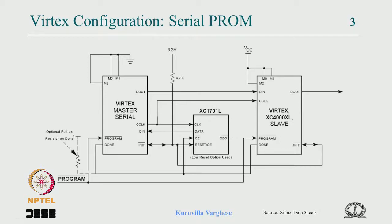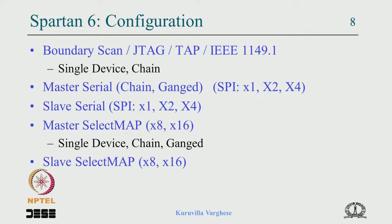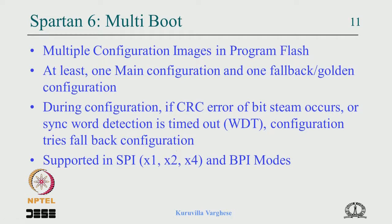Bitstream compression is useful because only part of the FPGA may be configured — resources not used are removed from the configuration to reduce storage and configuration time. This is helpful where memory space is limited or you want faster power-on configuration. Each device takes a certain configuration time depending on complexity; compression reduces this. Another option is storing a golden configuration in a separate flash location, working with SPI flash and BPI — BPI is the platform flash with 8-bit or 16-bit interface that also has JTAG.